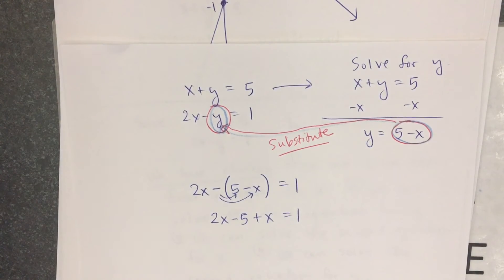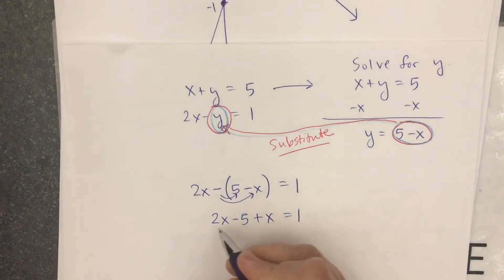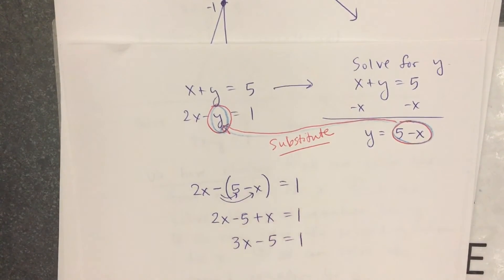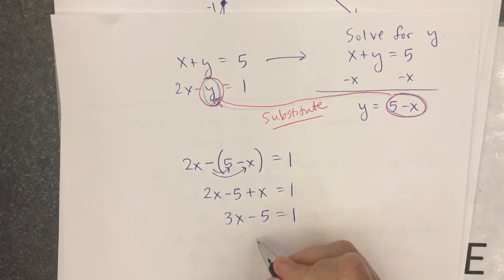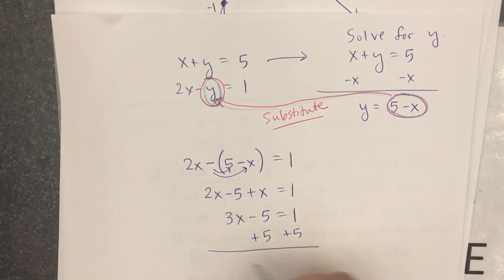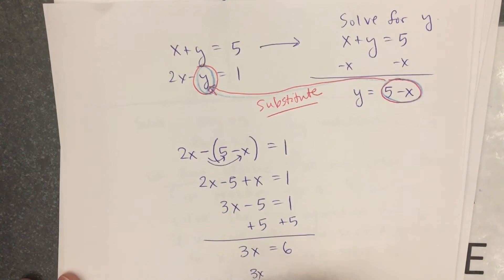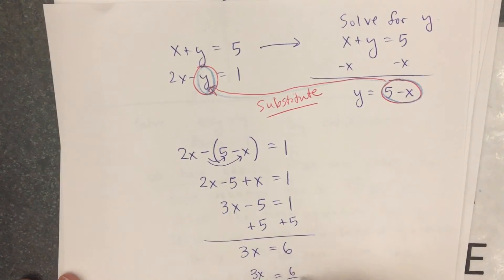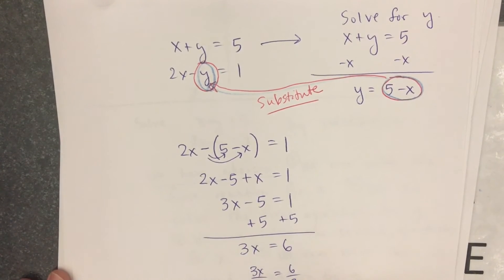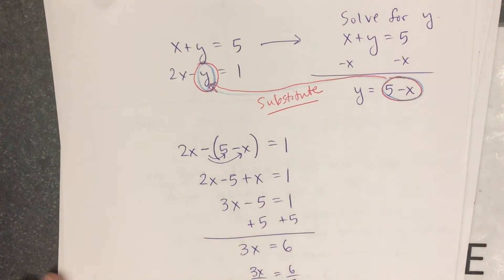Now, we can combine the like terms. 2x plus x is 3x. 3x minus 5 equals 1. Add 5 to both sides. I get 3x equals 6. What is my last step there? Divide by 3. Thank you for that answer. And if I divide by 3, I get x equals 2.